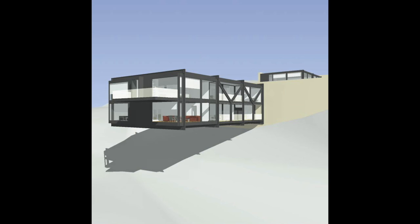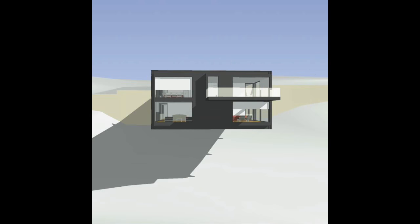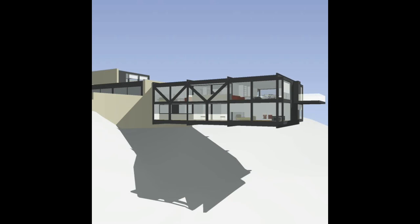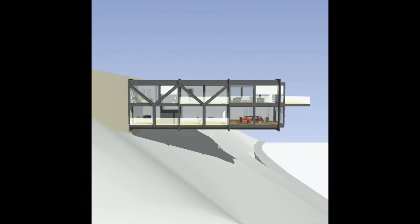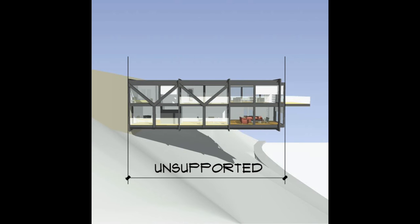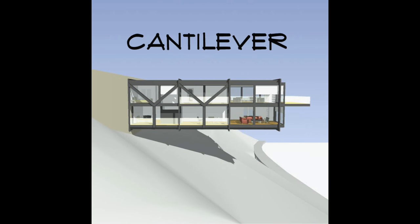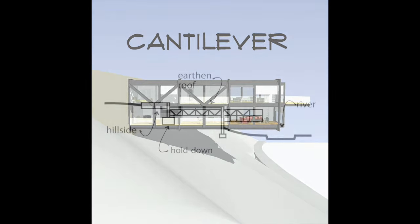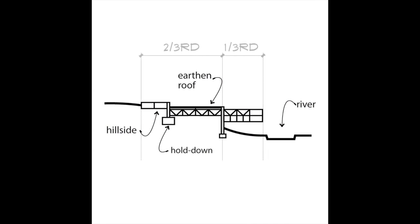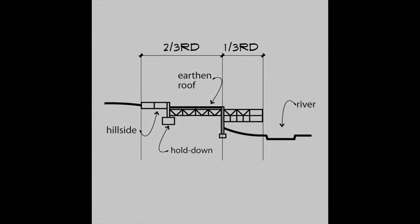The word cantilever in architecture describes a condition in which an object or building projects outward while unsupported over an unspecified length. The structural rule of thumb for a cantilever is two-thirds support allows for one-third unsupported.